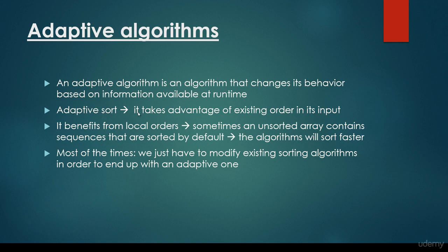Adaptive sorting takes advantage of existing order in its input. It benefits from local orders. Sometimes an unsorted array contains sequences that are sorted by default. The algorithms will sort faster because it benefits from local orders. Most of the time, we just have to modify existing sorting algorithms in order to end up with an adaptive one.